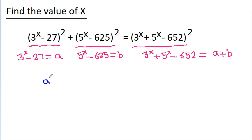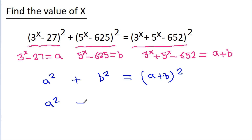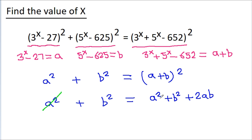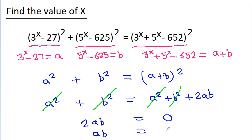So we can get a squared plus b squared is equal to (a plus b) squared, which expands to a squared plus b squared plus 2ab. Now a squared and a squared cancel, and b squared and b squared also cancel, giving us 2ab equals 0, or ab equals 0.